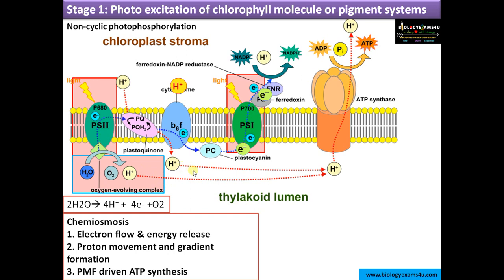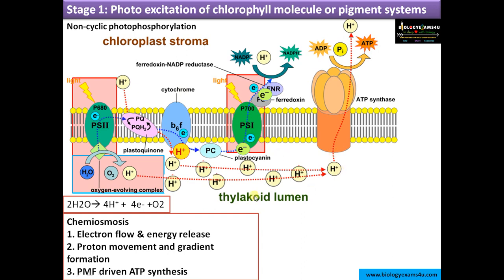The second way by which the number of protons increases in the thylakoid lumen is during electron flow — from high energy to low energy in a downhill reaction. The energy released is used to pump protons from the chloroplast stromal side into the thylakoid lumen through proton channels like cytochrome. There will therefore be a higher concentration of H⁺ ions in the thylakoid lumen compared to the stromal side, and this difference is called the proton gradient.